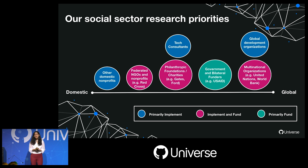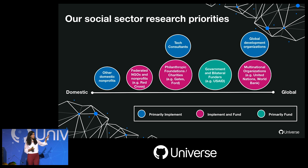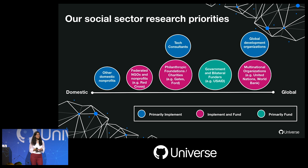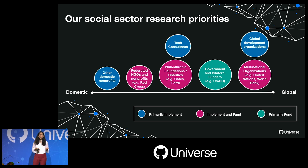Of course, there are organizations that both implement and fund projects. This space is huge with a lot of actors. We focused on areas that would give us a diverse set of inputs and align with the priorities of the Case Foundation and GitHub. We talked to NGOs and nonprofits domestically and internationally — such as YMCA and Mercy Corps — foundations such as Gates and Ford, multinational organizations such as the UN and the World Bank, and tech consultants working internally or independently across multiple social sector organizations.